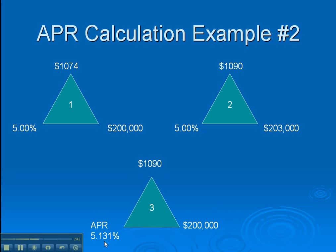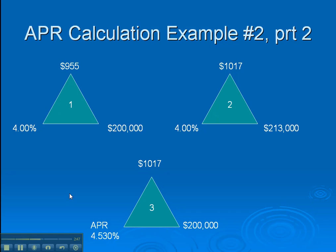Let's compare that to a new loan and see who has the better APR. You go to another lender, same day, same rate environment, and they say they can give you 4%. It has a $955 payment — way lower — and a 4.530% APR, which is way lower too. If we get into the calculation, you'll see that the loan plus fees on our 5% example was $203,000, and here it's $213,000 — so there's $10,000 in extra fees. That's what it costs to buy the rate down from 5% to 4%. You may or may not have been told that, but that's what it's going to cost.